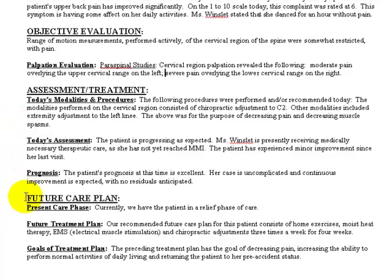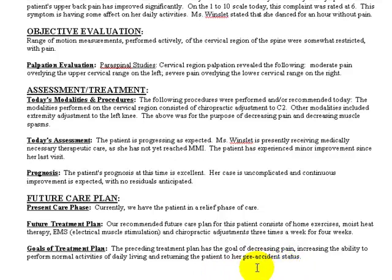At the bottom here, you have the future care plan — the plan that we're going over three times per week for the next four weeks. Here are your goals: the preceding treatment plan has the goal of decreasing pain, increasing the ability to perform normal activities of daily living, and returning the patient to her pre-accident status. Goals like returning to pre-accident status and getting back to normal activities of daily living are longer-term goals you couldn't accomplish in one visit. So you really do have a difference between your plan goals and your today's goals.